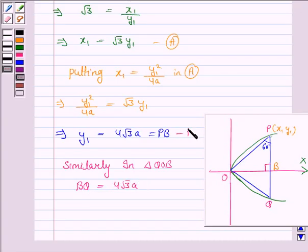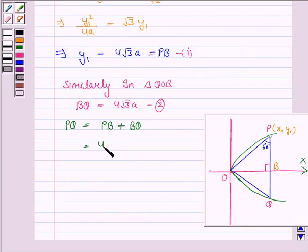Let's call this as 1 and this as 2. So, PQ is equal to PB plus BQ. Now, PB is 4 root 3 A. BQ is also 4 root 3 A. So, the sum is 8 root 3 A.